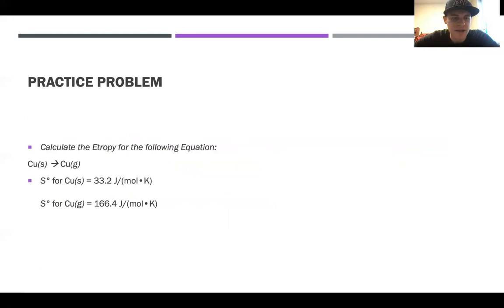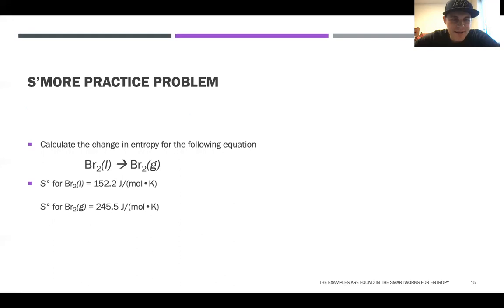So this problem is calculate the entropy for the following equation. You have solid copper, that's going to be going to copper in a gaseous state. And then after that you have the given entropy for copper in both its solid and gaseous states. So pause the video and do that real quick. Okay. So that's not rocket science. You just have one product and one reactant. So you just take the product and subtract from it the reactant, and there's no difference in moles. So you don't have to do any multiplication or anything like that. So it's just 166.4 minus 33.2, and you're going to get 133.2 joules per mole right there.